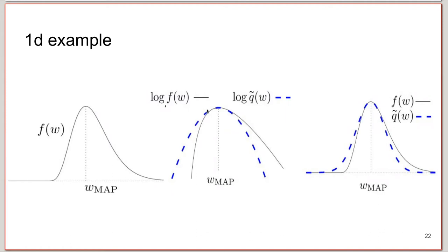In a one-dimensional example, we find the maximum of the target distribution, take the log, and fit a quadratic function (shown in blue) centered at the MAP. Taking the exponential gives a Gaussian whose mean matches the target's mode and whose second derivative at the MAP matches the target's curvature. This Gaussian is shown alongside the original target, demonstrating how the Laplace approximation works in practice.